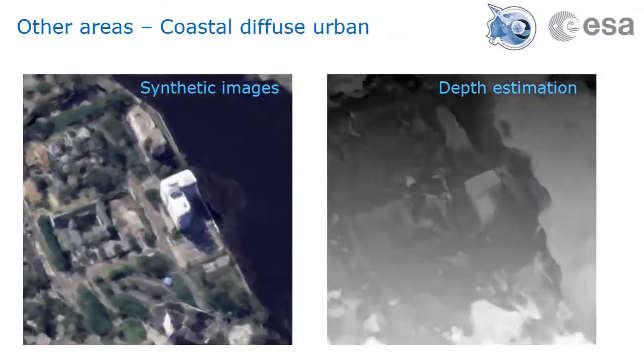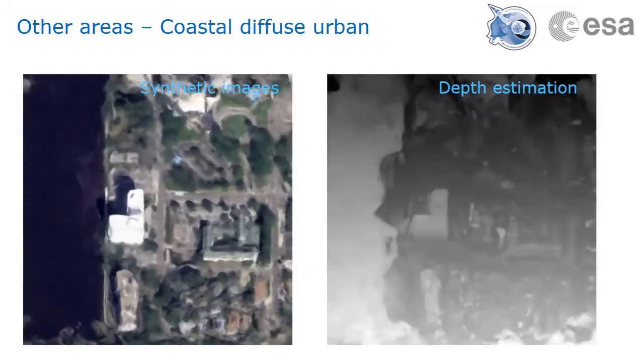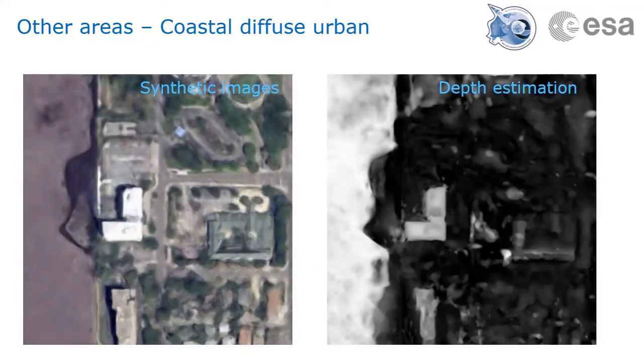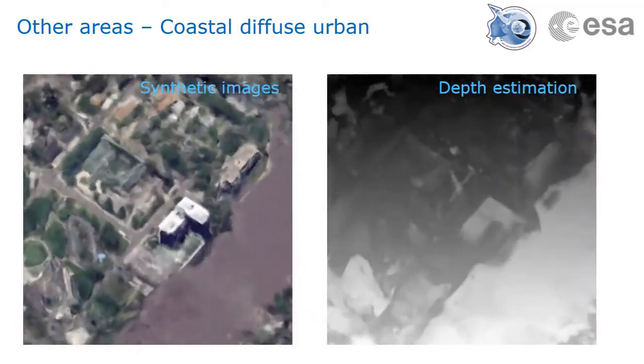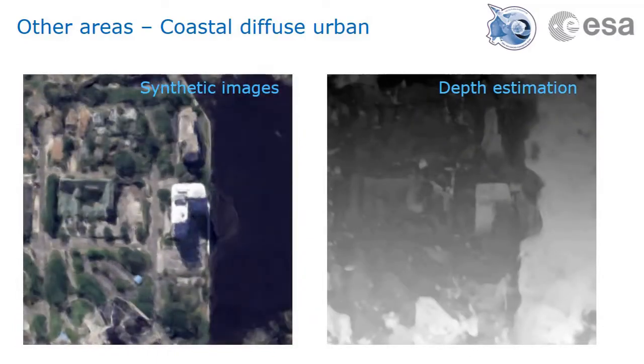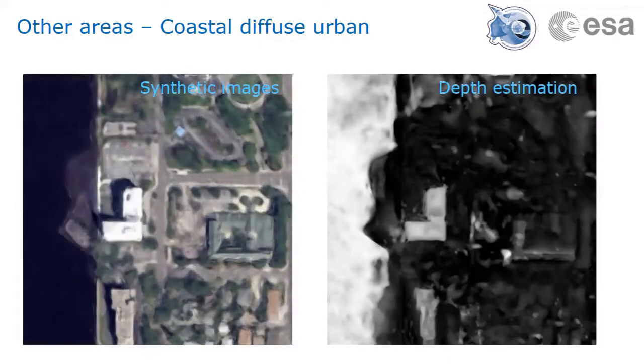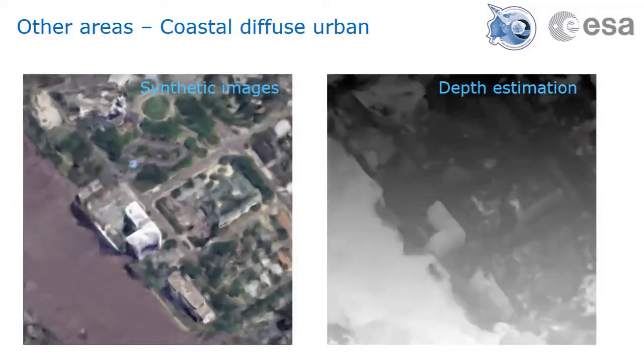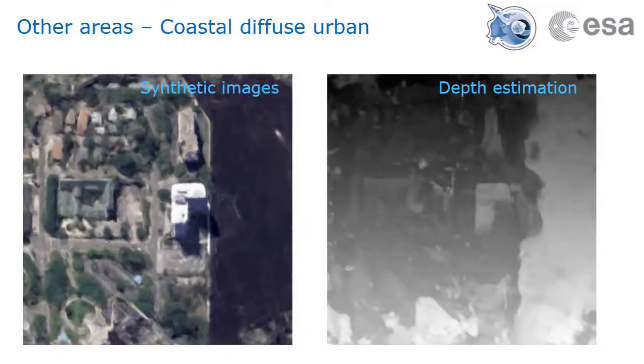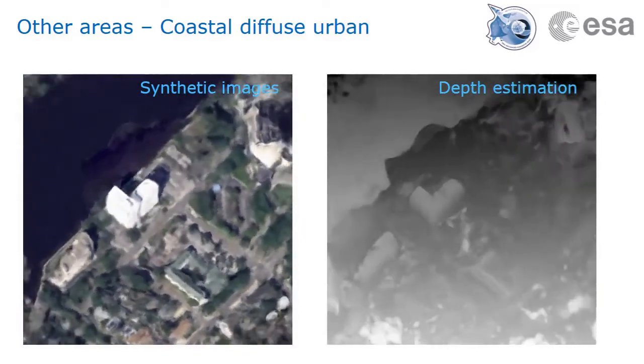The last example is a coastal urban area. While the L-shaped building is well detected and shaded, the height of the water surface is poorly learned. This is because of the lack of visual cues that the network needs in order to learn shape. Luckily, water is quite easy to detect through other means, so we don't see this as much of an issue for practical purposes.